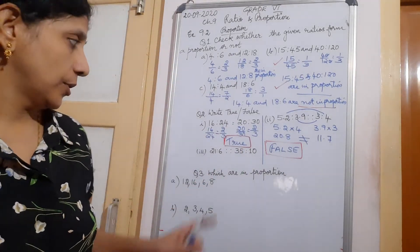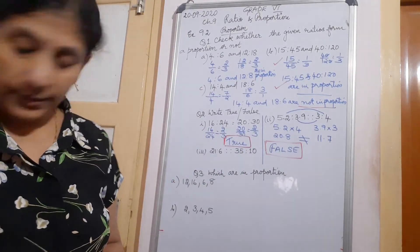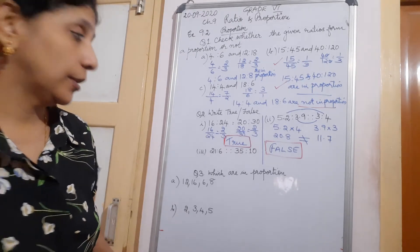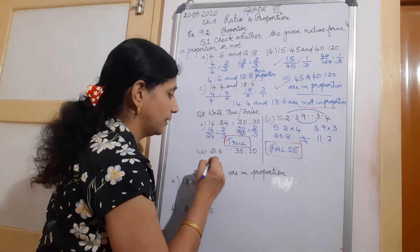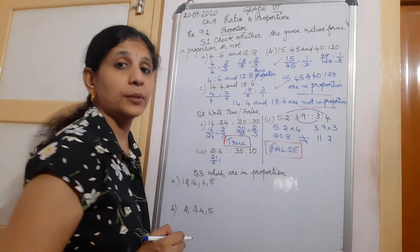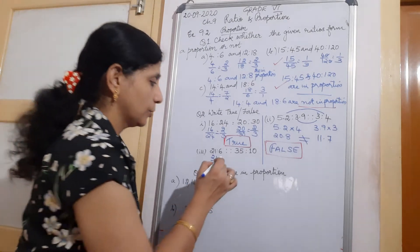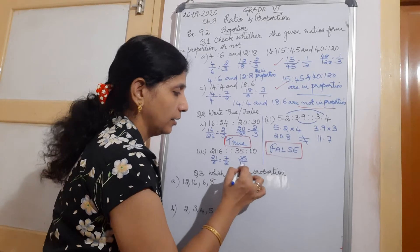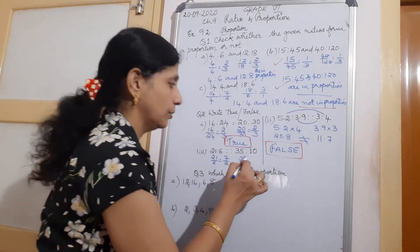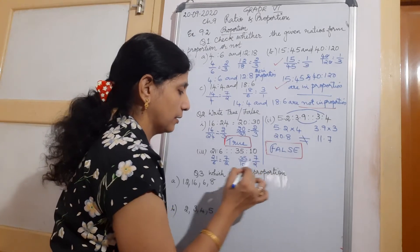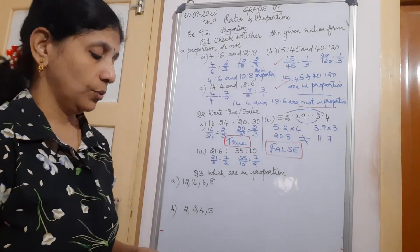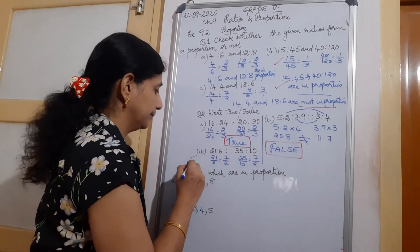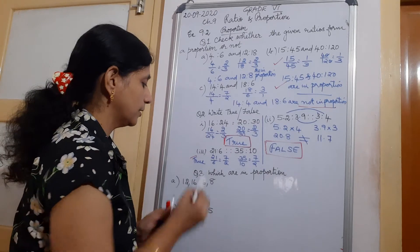What about the third question? 21 is to 6 and 35 is to 10. So 21 upon 6 — both are in the tables of 3 — giving 7 upon 2. And 35 upon 10 — both are in the tables of 5 — giving 7 upon 2 as well. So they are equal. What will you write here? True. So this one is also true.